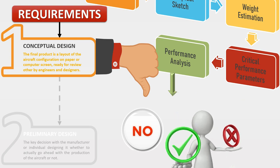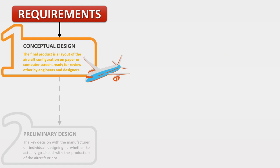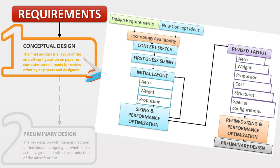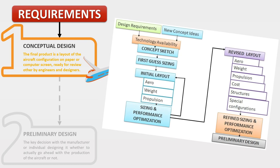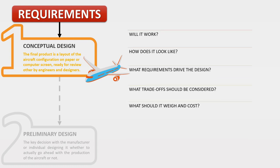If the design is not meeting the requirements, you need to iterate the critical performance parameters. If yes, then you optimize the best design. Optimization is carried out by plotting the performance of different airplanes on a graph to obtain the optimum value — we will see this in the next module with a practical demonstration. In a nutshell, the conceptual design answers: Will it work? How does it look? What are the basic driving design requirements? What methods should we consider? And what will be its weight and cost?